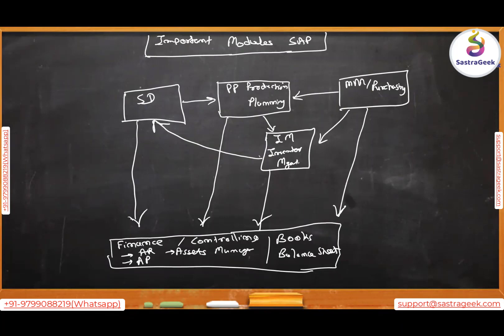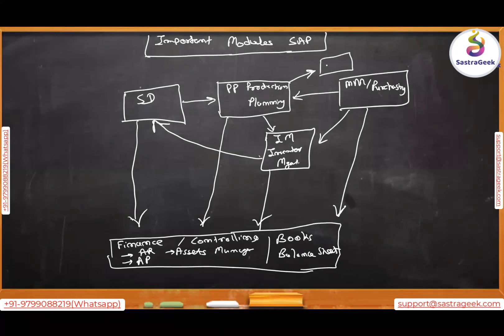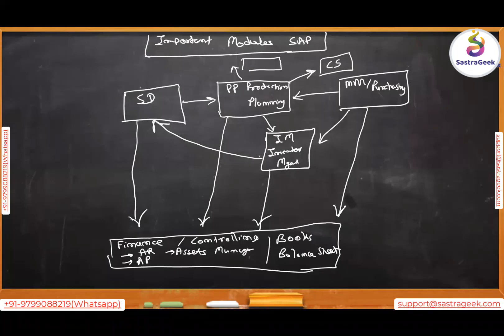If you're in the business of selling equipment or instruments, those need maintenance support — that's CS, Customer Service. For example, if your refrigerator from Whirlpool breaks, you need maintenance. Similarly, you may need to do your own preventive maintenance and fix plant breakdowns — that's the Plant Maintenance module, PM. These modules show how everything interacts with each other.